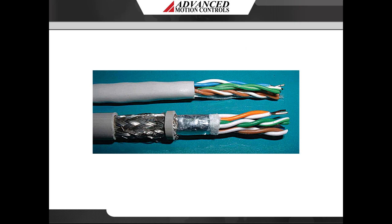Cables are susceptible to EMI, both as a source acting as an antenna and as a receiver picking up noise radiated from other equipment. Cable shielding is an effective way to protect data against EMI, reduce emissions and increase robustness. Twisted pairs of wires are also quite effective in reducing magnetic pickup because the enclosed area is small and the signals induced in successive twists cancel.